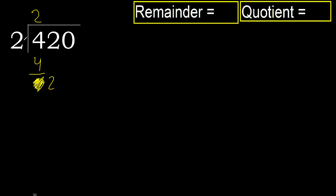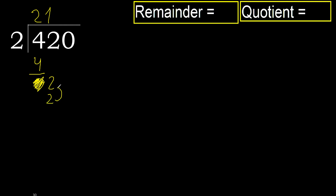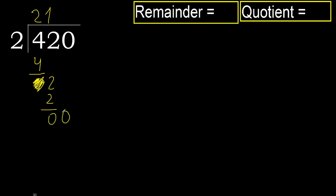2 is not less. 2 multiplied by 2 is 4 — 4 is greater. Multiply by 1 is 2, is not greater. 2 minus 2 is 0. Next — eliminate 0 on this side.